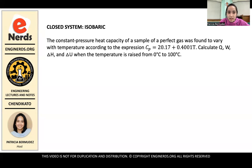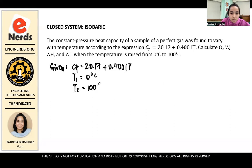So the question states that the constant pressure heat capacity of a sample of a perfect gas was found to vary with temperature according to the expression CP is equal to 20.17 plus 0.4001T. Calculate Q, W, delta H, and delta U when the temperature is raised from 0 degrees Celsius to 100 degrees Celsius. So in this problem, there are only two values that are given. So first, we have CP is equal to 20.17 plus 0.4001T.